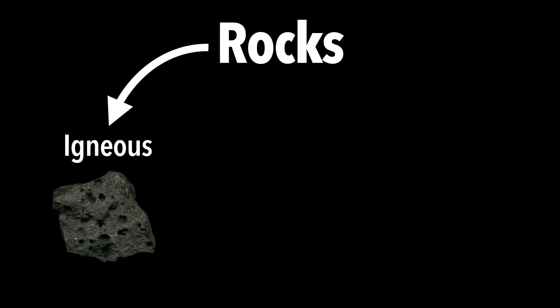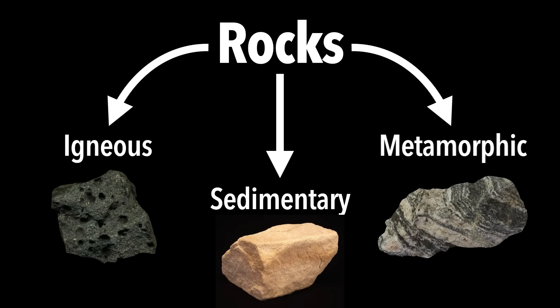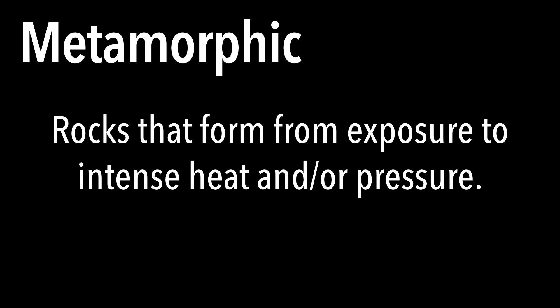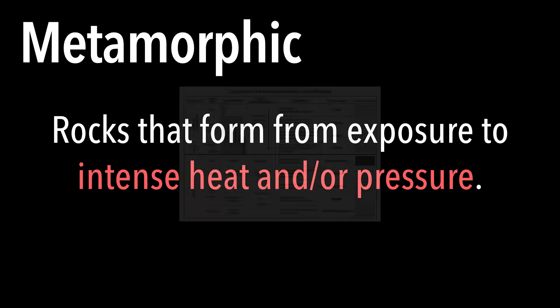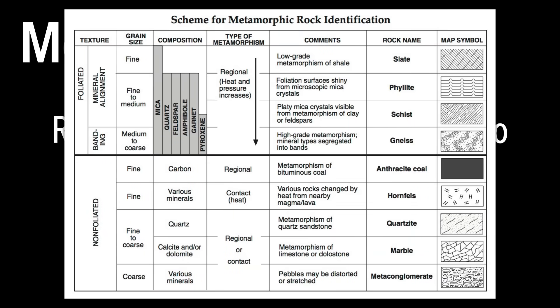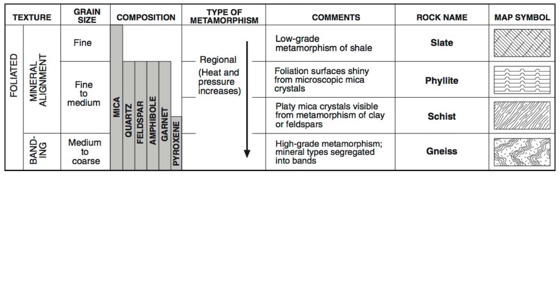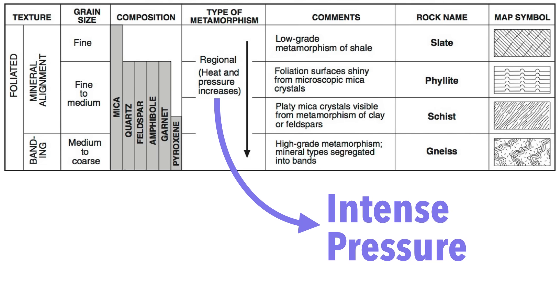Back to our rocks — we have igneous, sedimentary, and one more group to look at: metamorphic rocks. Metamorphic rocks are formed from exposure to intense heat and/or pressure. You can take any kind of existing rock, and if it gets forced down by the motion of tectonic plates into the Earth's crust, intense heat and pressure down there will cause it to change or morph into something new. The top section of the reference table are referred to as foliated rocks, and these form primarily from regional metamorphism, which is primarily a result of pressure.